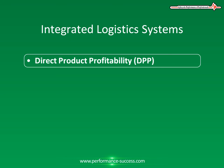Thus, in the same way that a budgetary system operates, the actual costs of distributing a product are monitored and compared to a standard cost determined using DPP. In this way, areas of inefficiency throughout the whole logistics operation can be identified. DPP techniques can identify the cost of specific products to individual customers and so provide invaluable information for effective marketing strategies.